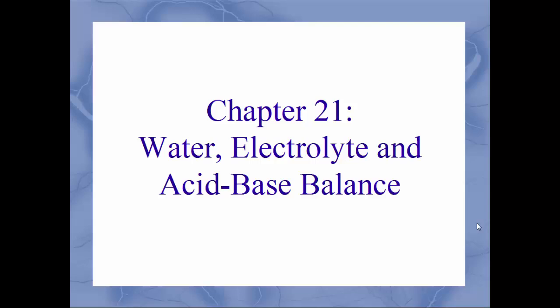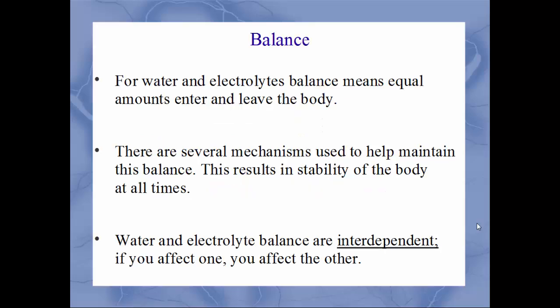In this chapter we will talk about water, electrolyte, and acid-base balance. When we talk about balance for water and electrolytes, we're talking about the equal amount of each entering and leaving the body — the same amount going in versus the same amount going out. The body has several mechanisms it uses to help maintain this balance, resulting in your body being stable at all times.